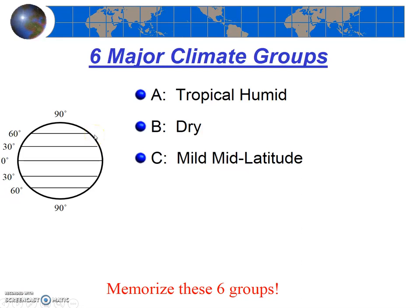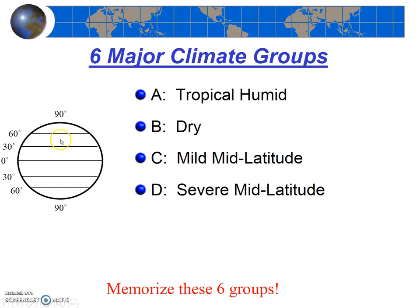Next, moving up to our mild mid-latitude and severe mid-latitude climates. Both of these climates are in the mid-latitudes. The C climates, the mild mid-latitude climates, tend to be between 30 and 60 degrees latitude north and south, and they're often, but not always, coastal, giving them a more mild temperature profile. On the other hand, our severe mid-latitude D climates are still in the mid-latitudes, but they're a little more poleward — perhaps up near 60 degrees or even higher — or they might be in the interiors of the continents, where we get colder winters and hotter summers.